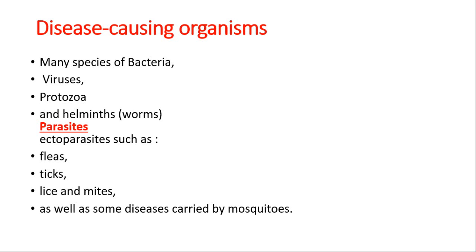Firstly, rodent-borne diseases. Rodentia is one of the most abundant and diversified orders of living mammals, representing about 43% of the total numbers of mammalian species. Its species are distributed on every continent except Antarctica and include many of the most abundant and taxonomically diverse mammals. As humans take over and expand our activities into the remaining natural environment, we come into closer contact with more species of rodents and more diseases.